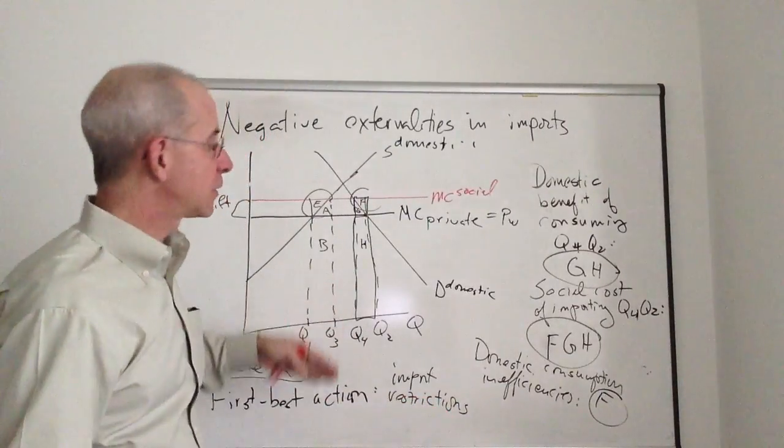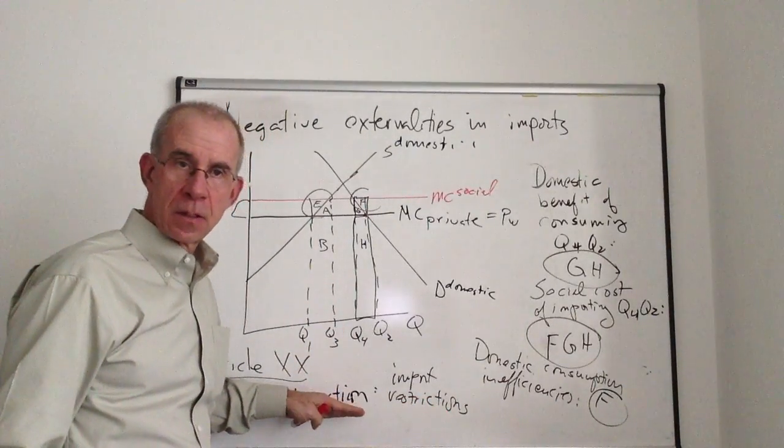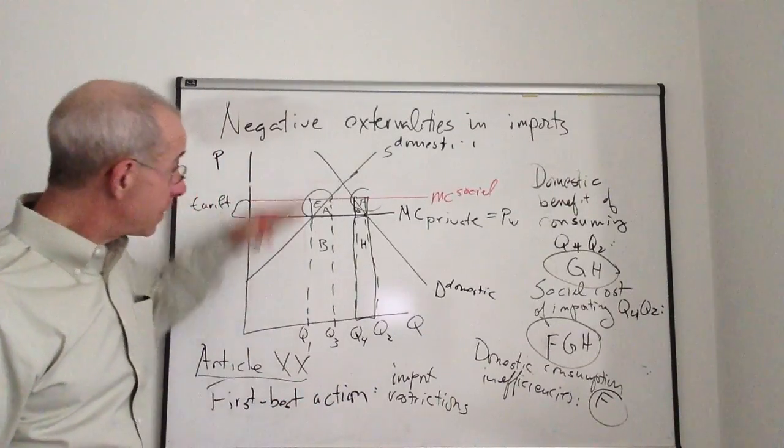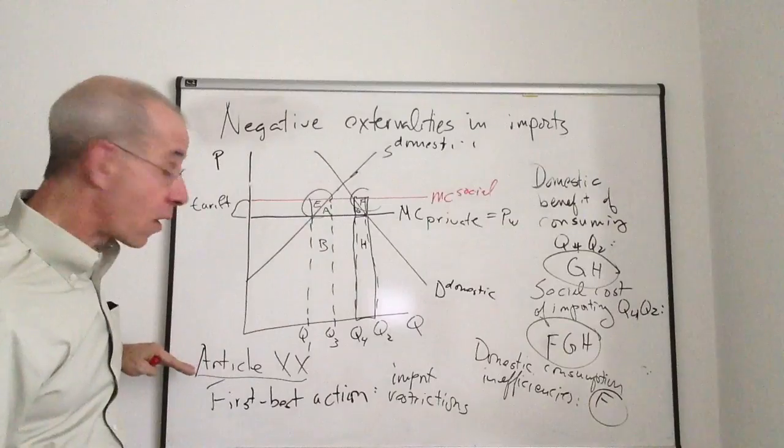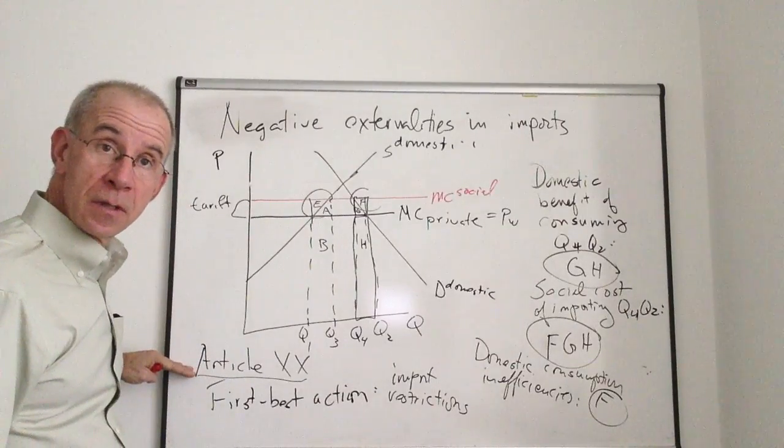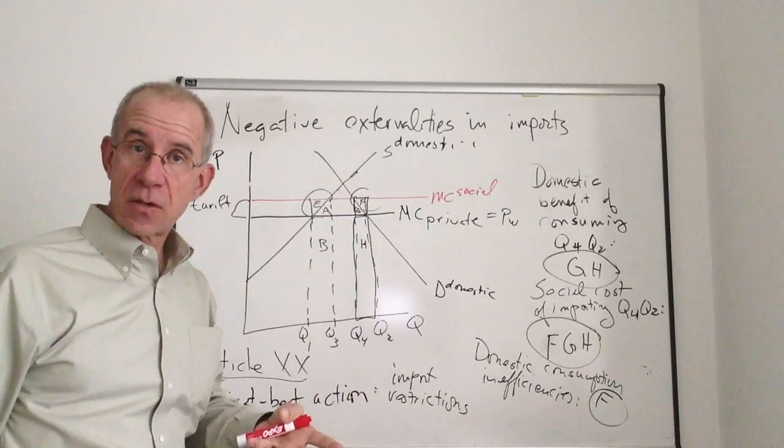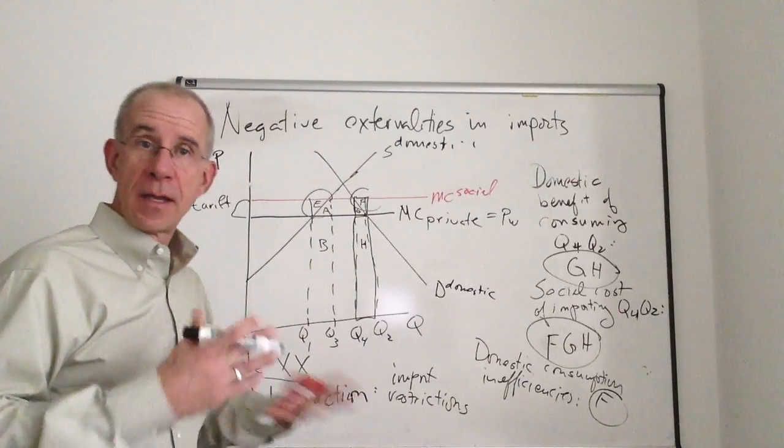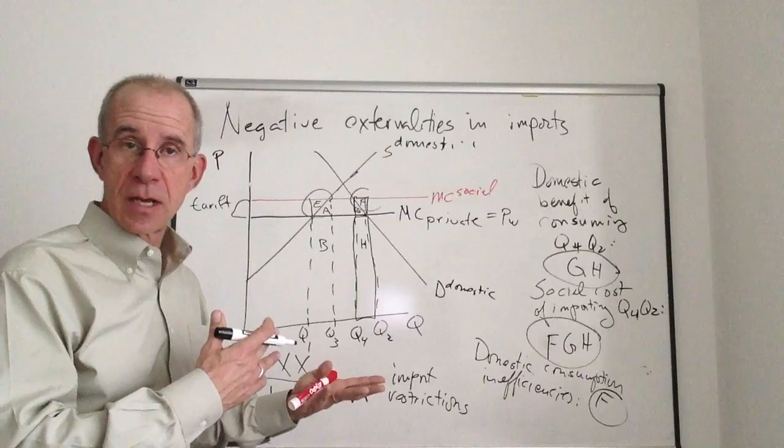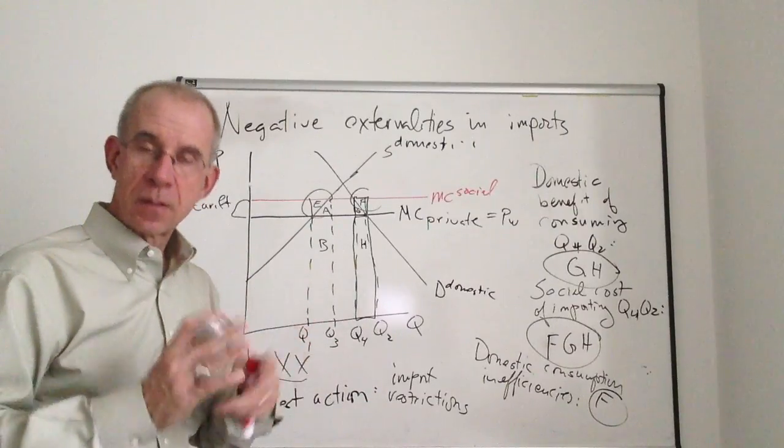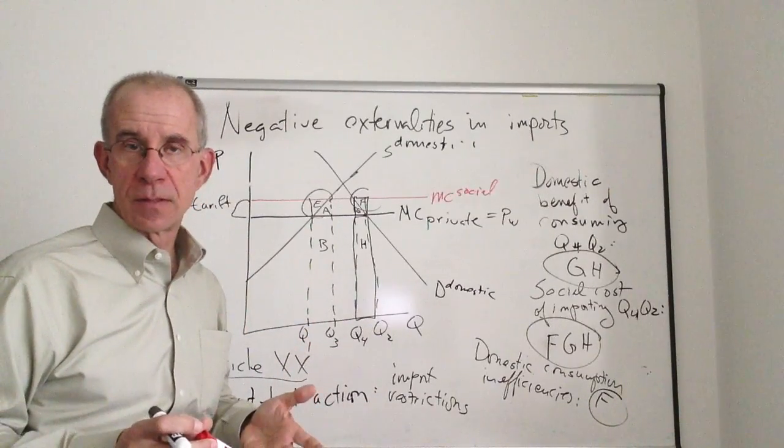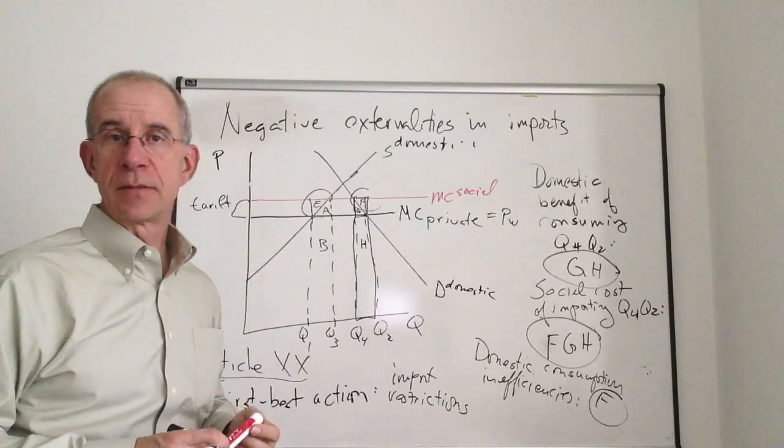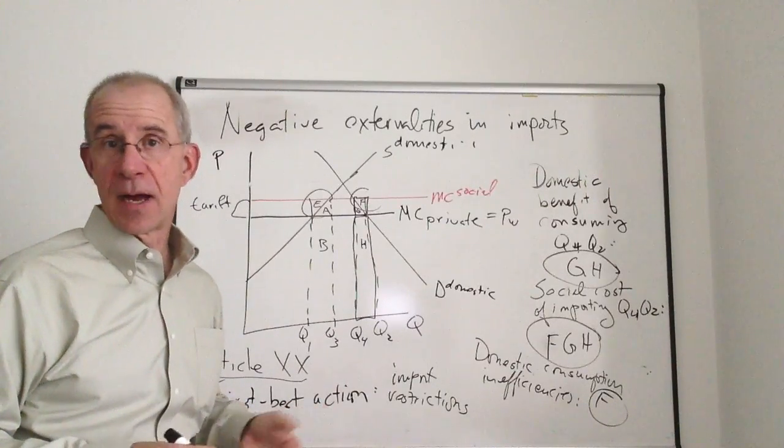So there are actually some significant limitations on the ability of countries to invoke Article 20, but this really is the economic analysis of why Article 20 exists, or Article 21, which deals with national security exceptions. So there are instances where import restrictions might make sense because of the externalities, but the WTO and the GATT agreements put significant restrictions on the ability of countries to do that in an arbitrary and unjustifiable way.